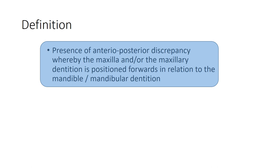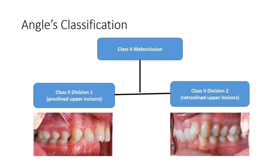The definition of a Class 2 malocclusion is a presence of an anterior-posterior discrepancy whereby the maxilla and/or the maxillary dentition is positioned forwards in relation to the mandible or the mandibular dentition. Class 2 malocclusion can be divided into two divisions: Division 1, whereby the upper incisors are proclined, and Division 2, whereby the upper incisors are retroclined.